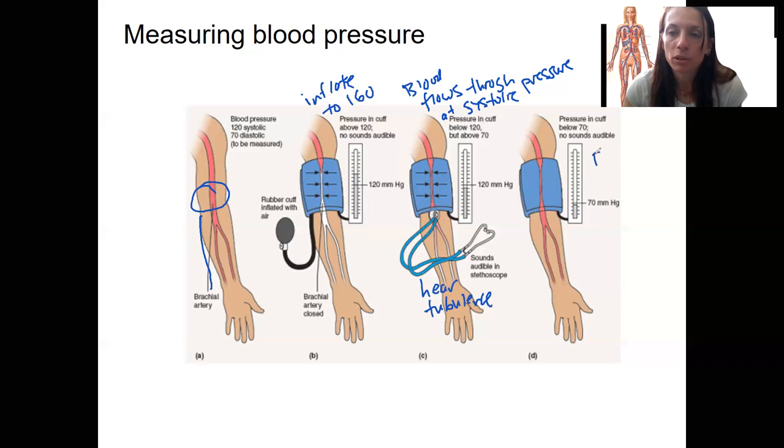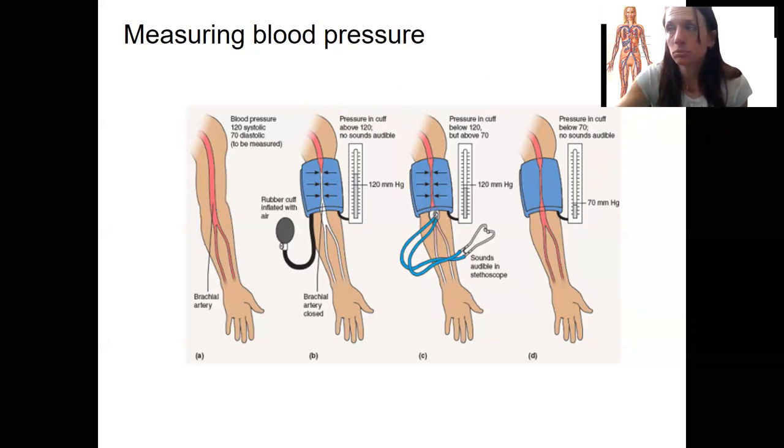That's when the blood flows freely. So as you decrease the pressure in the cuff, eventually blood can just flow through normally. That's our diastolic pressure. For listening, you're going to no longer hear turbulence. It goes back to basically inaudible sounds. You're not hearing anything anymore. So, and we'll do this in lab. It'll make maybe more sense then.